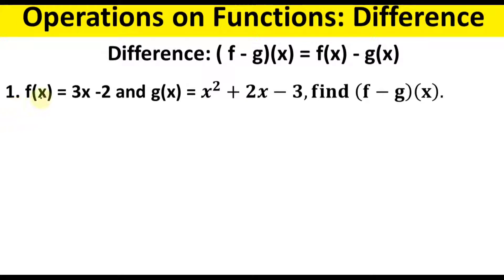Let's proceed to example number one. If f of x equals 3x minus 2, and g of x equals x squared plus 2x minus 3, find the quantity of (f minus g)(x).